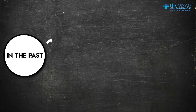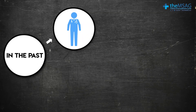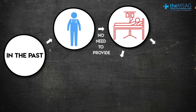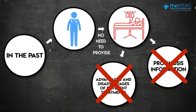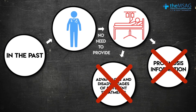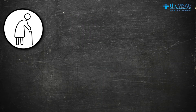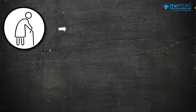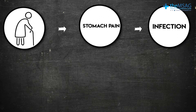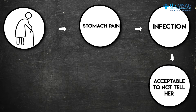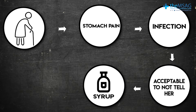In the past, if you were a doctor, you didn't have to provide patients with information about their prognosis or the advantages and disadvantages of different treatments. It was assumed that you would decide the best course of action for your patient. So when my great great great grandmother called the doctor for her stomach pain, even if the doctor thought she had a severe infection, it was considered acceptable to not tell her and give her some syrup to try.